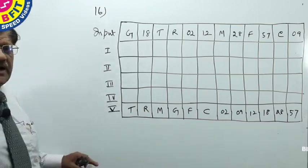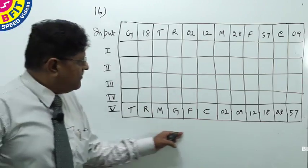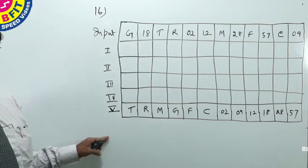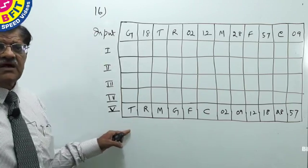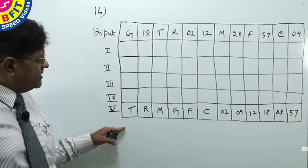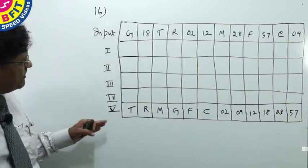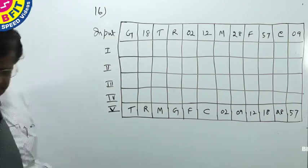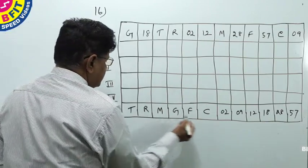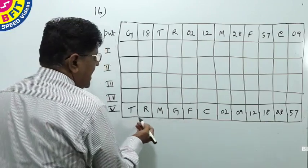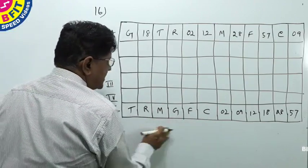If you want to find out the logic of the machine, you should look at the final line. Step 5 is the final line — it is the last step in the arrangement, meaning all arrangements are over. Now what is the logic? You simply look at this: T, R, M, G, F, C. The alphabets are arranged in descending order. There are 6 alphabets.